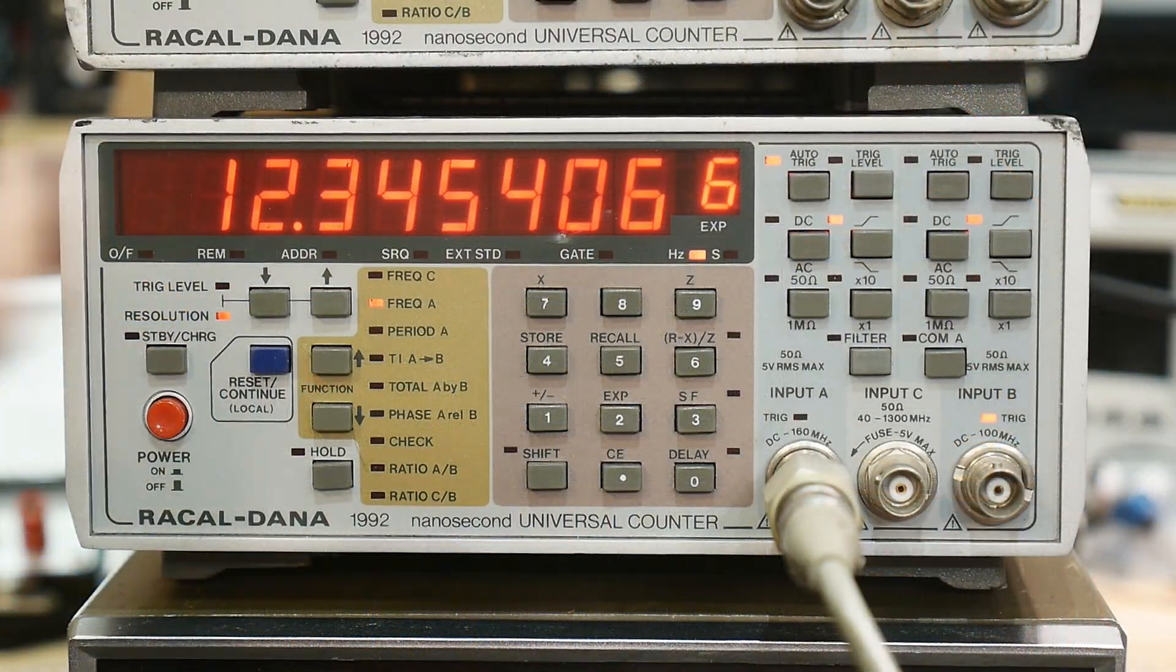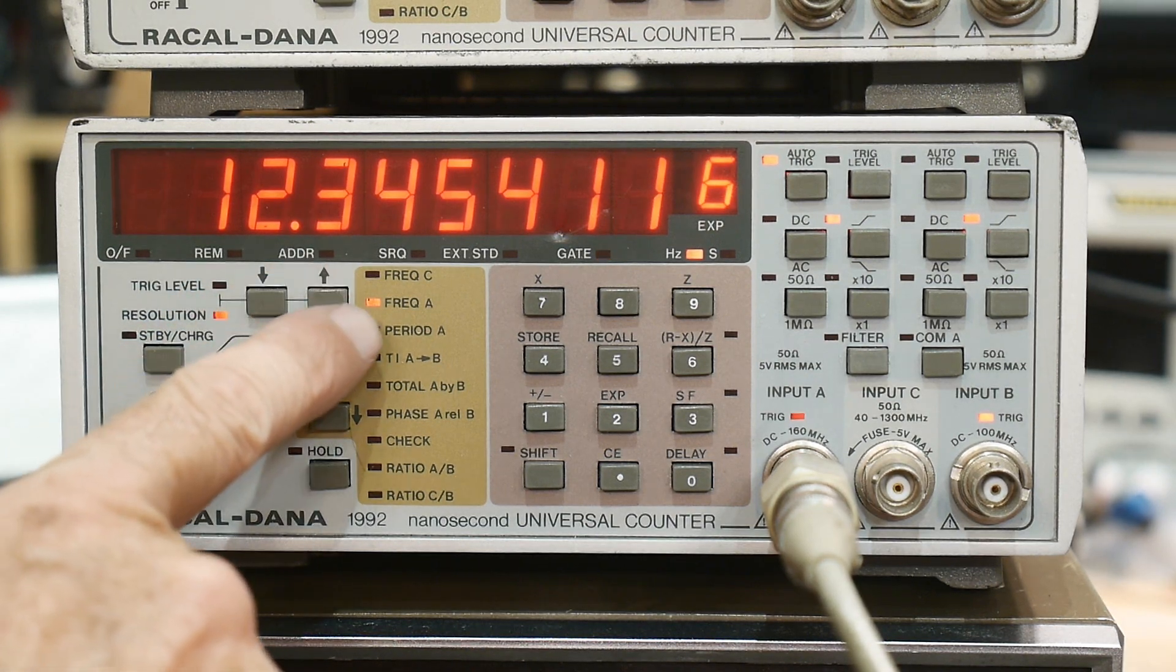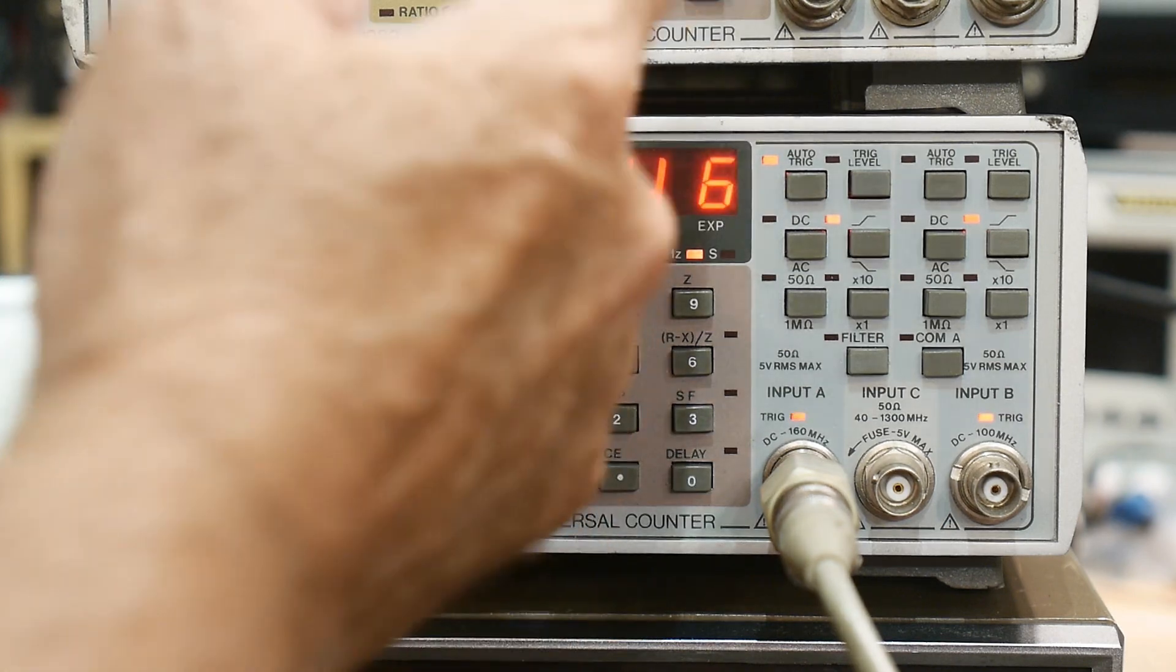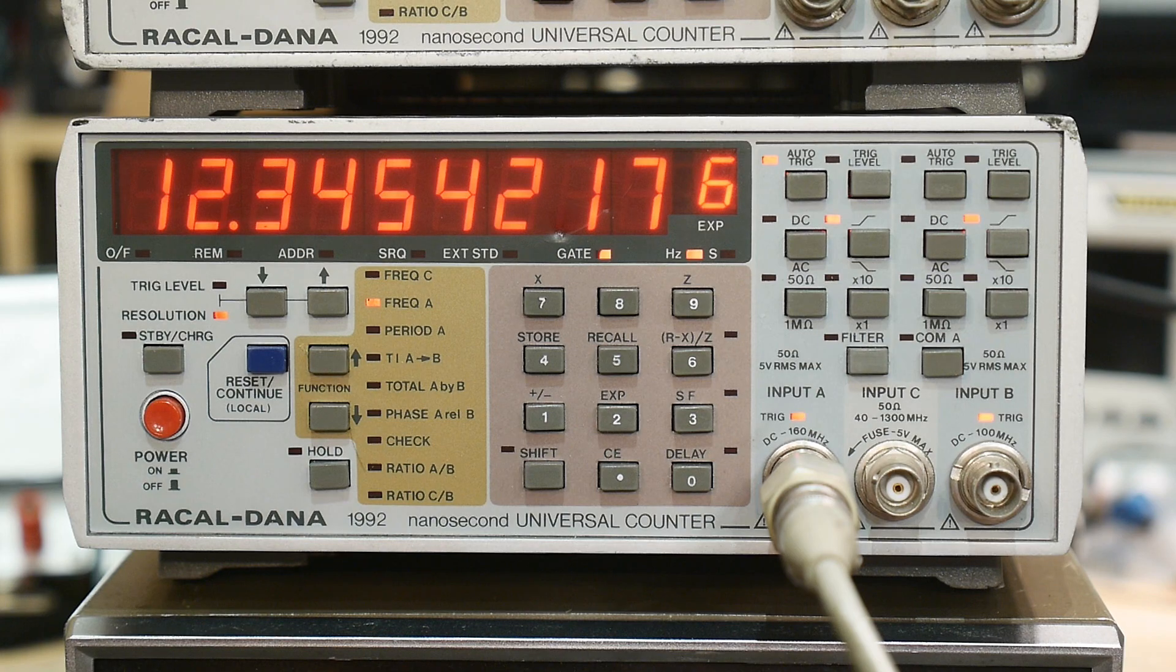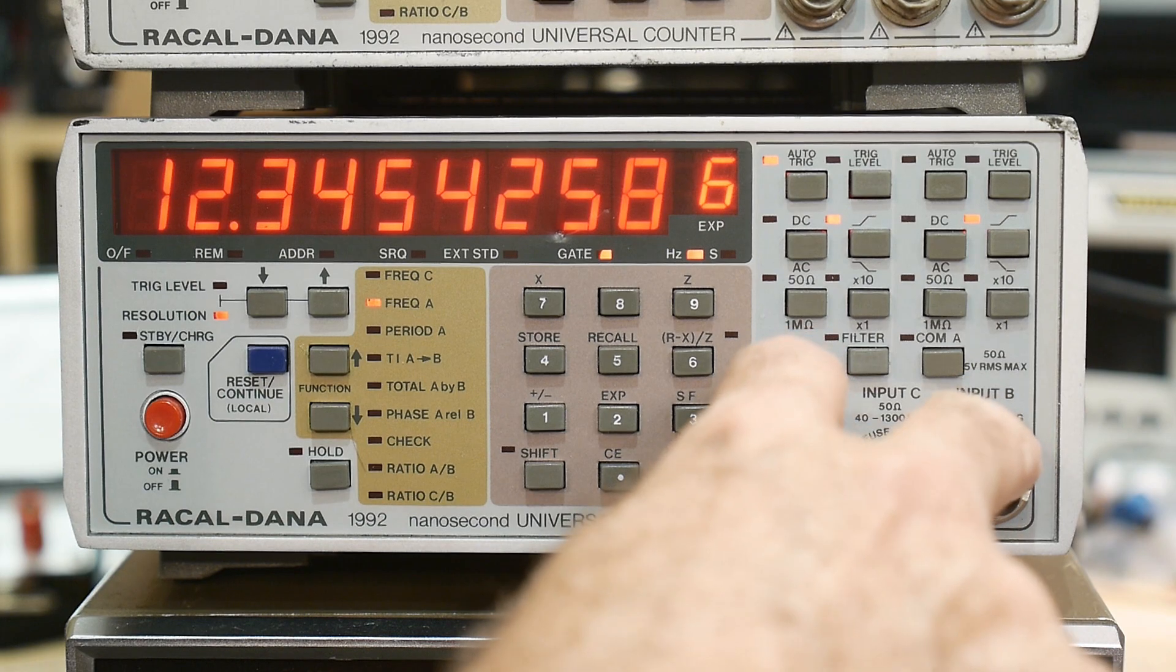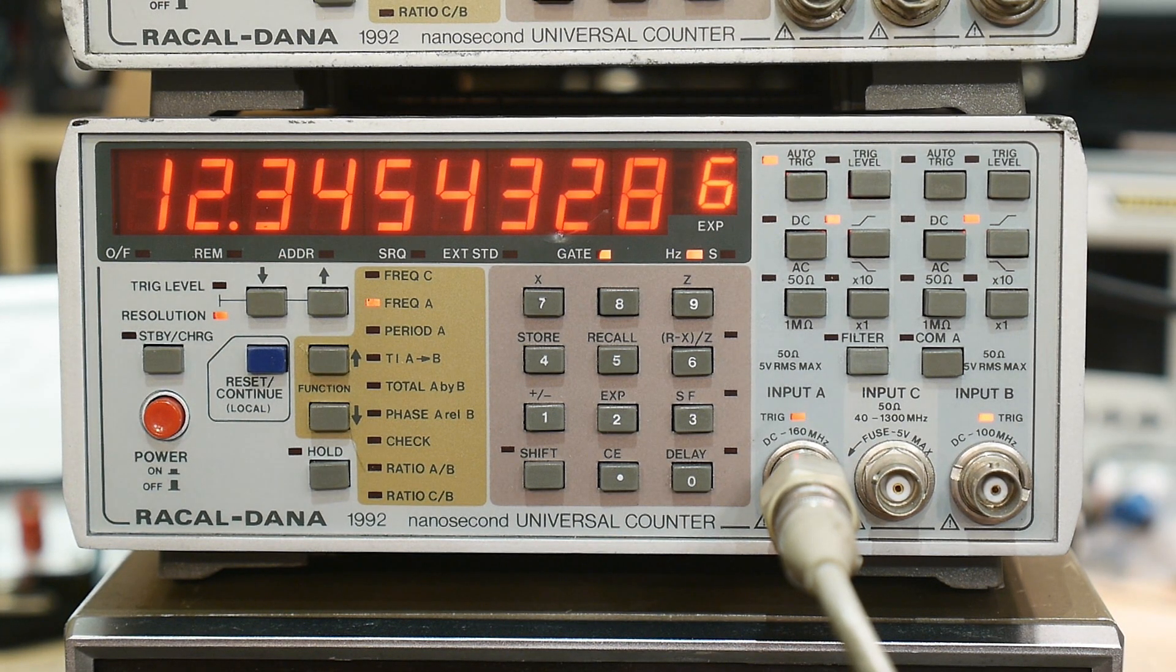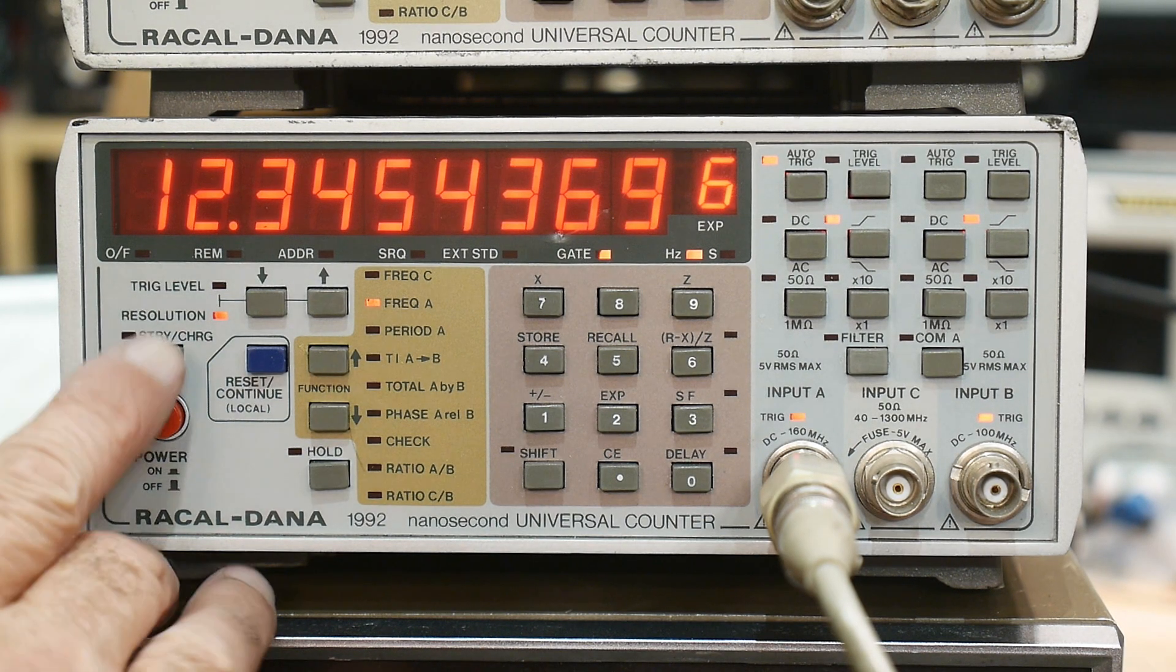All right, in case you forgot, this is what the Racal-Dana looks like. I can increase the number of digits here—one, two, three, four, five, six, seven, eight, nine digits plus an exponent. This one is able to do two inputs, A and B, and then it has a third input that goes up to 40 megahertz to 1300 megahertz.